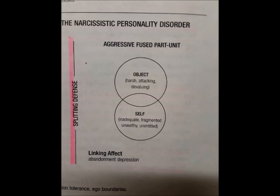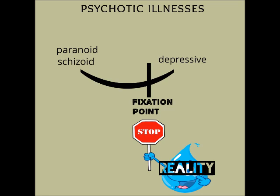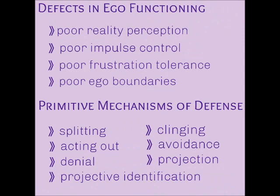And again, just like for the borderline, the linking effect is abandonment depression. As a result of fixation points established in the depressive position, you're going to see ego functions such as poor reality perception, poor impulse control, poor frustration tolerance, and lack of ego boundaries. Furthermore, the narcissist's primitive ego defense mechanisms, just like the borderline, are splitting, avoidance, denial, acting out, projective identification, and projection. All these defenses are why they are so difficult to tell apart. You have to add clinging and avoidance to the borderline, but their intrapsychic structure is different.